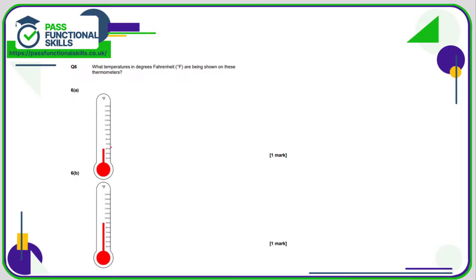6a. Here we're in Fahrenheit, but it doesn't matter whether we're reading Fahrenheit or Celsius, just where does it go up to? So this looks like 60 degrees Fahrenheit and that is 90 degrees Fahrenheit.